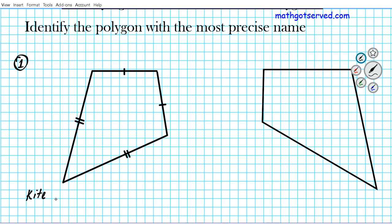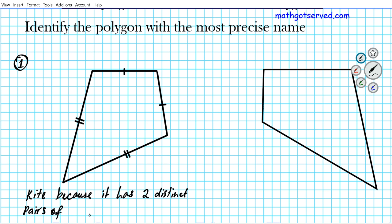It's a kite because it has two distinct pairs of congruent adjacent sides.